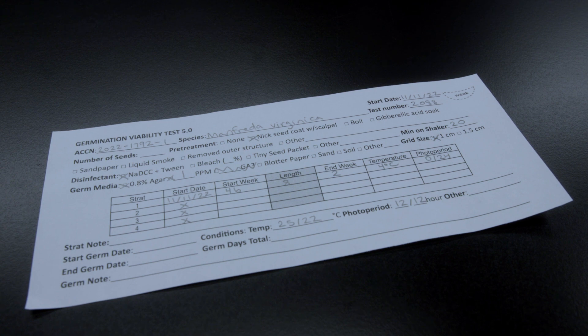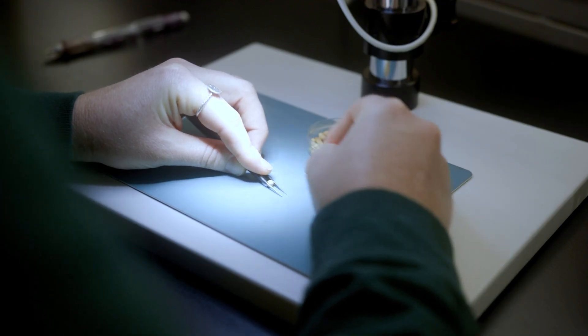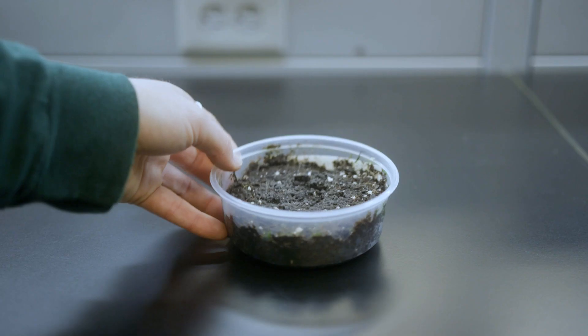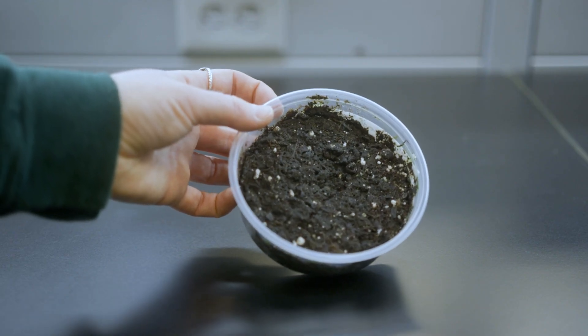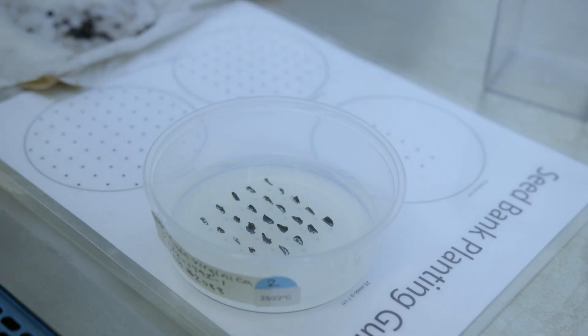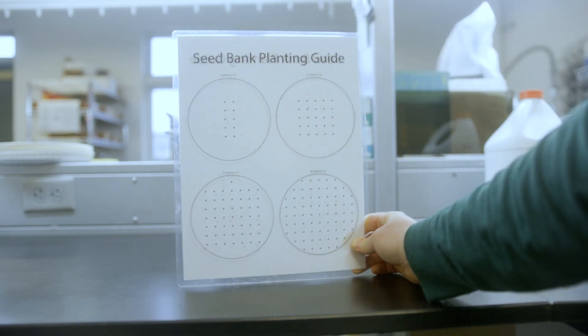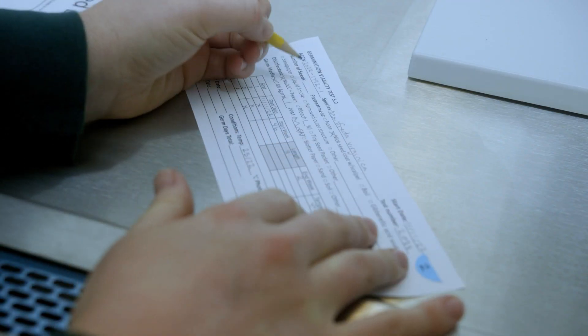Start date is when the seed will be planted. There are spaces to note any pre-treatment, such as nicking seed coats and boiling, method and length of disinfection, and type of media used, which is usually 0.8% agar and if anything is added to the media. After the seed is planted, I go back and note what size grid was used and the actual number of seeds planted.